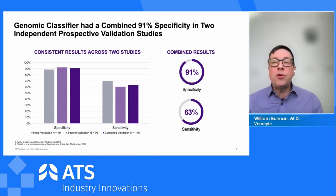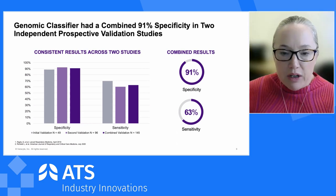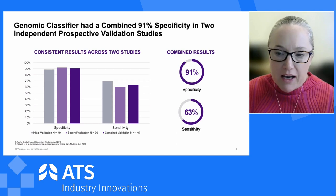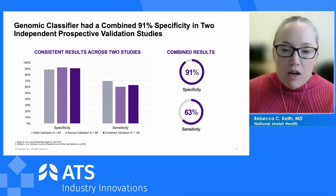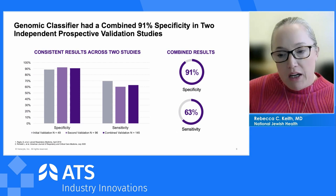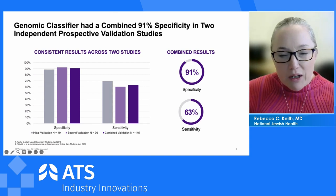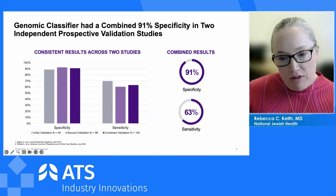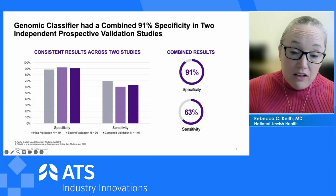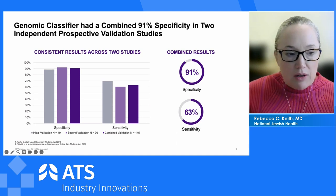The test was designed to have high specificity so that you would have high confidence when it reports genomic UIP positive. Sensitivity for the aggregate was 63%, which does mean that there are some patients with UIP who are not going to be detected by the classifier. Roughly one third of patients with UIP will get a negative result. That's a very important thing to remember when evaluating a particular result in the clinical context.